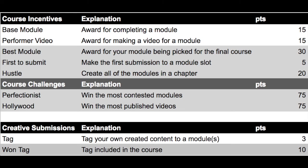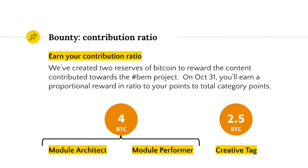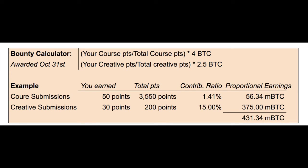As you submit modules, you'll be earning points. Submissions towards the course will earn course points, and submissions towards creative tags will earn creative tag points, each with respective pots reserved for the reward money. The bounty system works proportionally — on October 31st, your points will be compared to the total points of all others who contributed, and you'll receive a proportion of the pot based on your contribution ratio. I hope this was helpful, and if you have any questions, feel free to reach out.